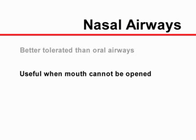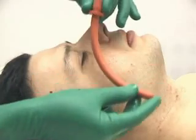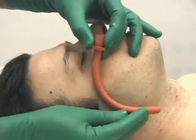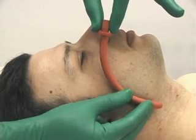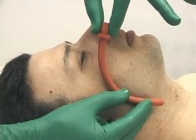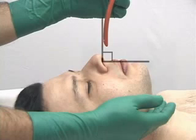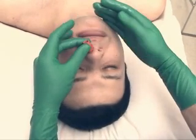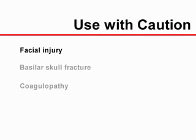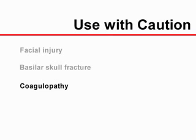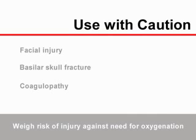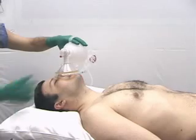Nasopharyngeal airways are particularly useful when the mouth cannot be opened. The simplest method of estimating their appropriate length is by correlating it with the external anatomy of the face and neck and taking into consideration the patient's height. Nasopharyngeal airways should be thoroughly lubricated and advanced perpendicular to the face and parallel to the floor of the nose, not towards the roof of the nose. They must be used with extreme caution in patients with facial injuries, basilar skull fractures, and coagulopathy, weighing the risk of further injury and bleeding against the need for oxygenation.